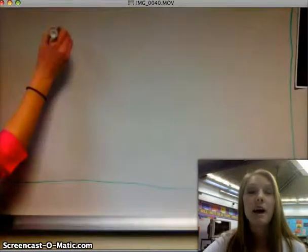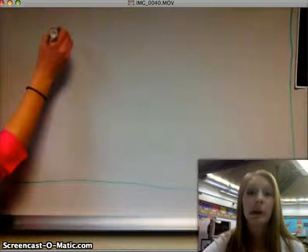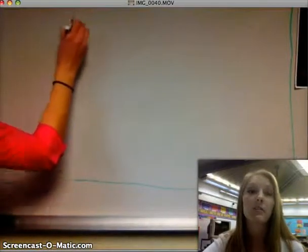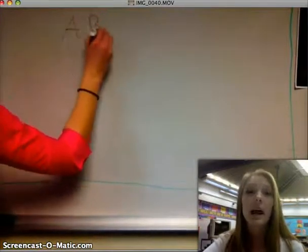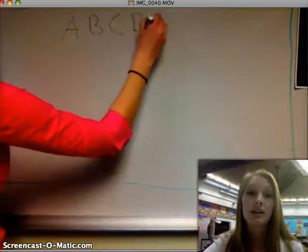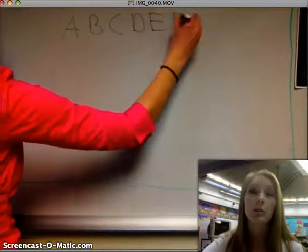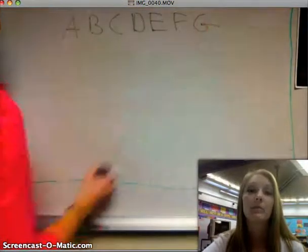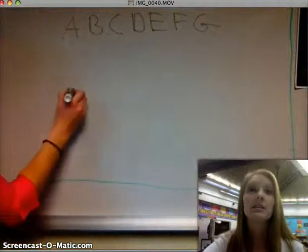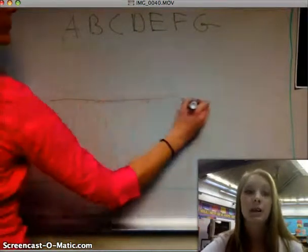First we need to know that the letters we use in our musical alphabet are the same as the first seven letters of our English alphabet: A, B, C, D, E, F, G. And we use those continuously up our musical staff. A, B, C, D, E, F, G, A, B, C, D, E, F, G, over and over again.